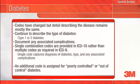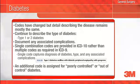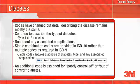ICD-9 usually required multiple codes. Take, for example, the diagnosis of type 2 diabetes with diabetic peripheral angiopathy with gangrene. This diagnosis required three codes in ICD-9, but in ICD-10, one code reports everything. An additional code is assigned when you describe the patient's diabetes as poorly controlled or out of control.